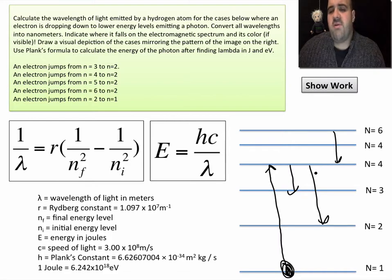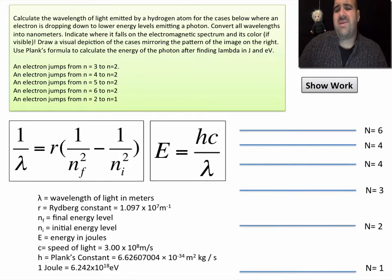What we want to do is figure out the wavelength and what type of light when an electron jumps from energy level three to energy level two, from energy level four to energy level two, and so on. We're trying to figure out what type of light is being created when electrons do this for a hydrogen atom.